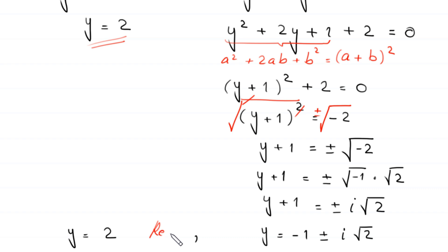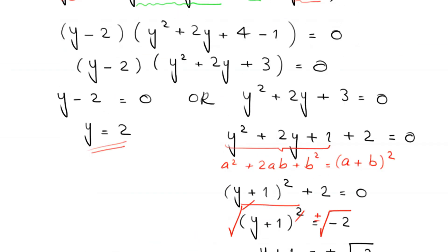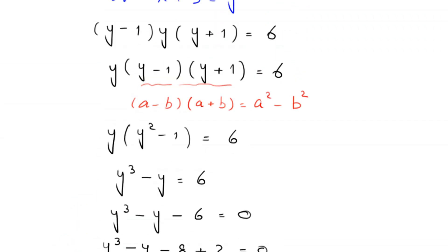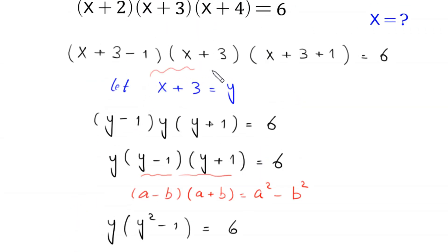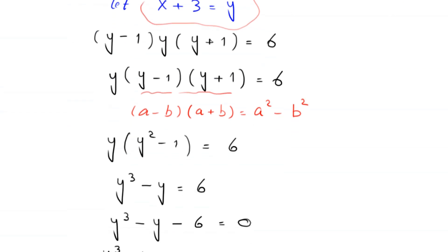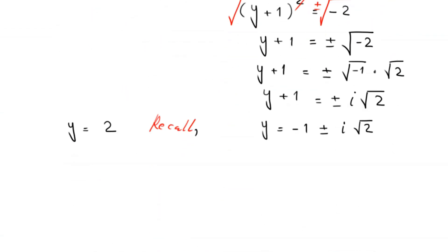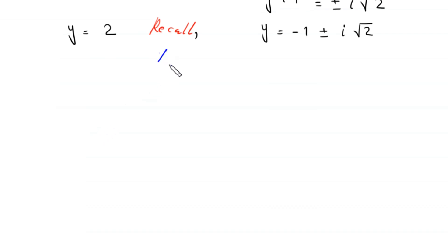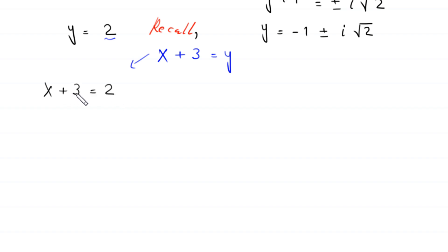Recalling that we substituted y = x+3: when y = 2, we get x+3 = 2, so x = 2-3 = -1.